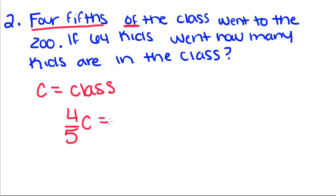So we have four-fifths of the class, which we're going to write as C, went to the zoo. And we know that four-fifths of the class is 64, because it says 64 kids went to the zoo.